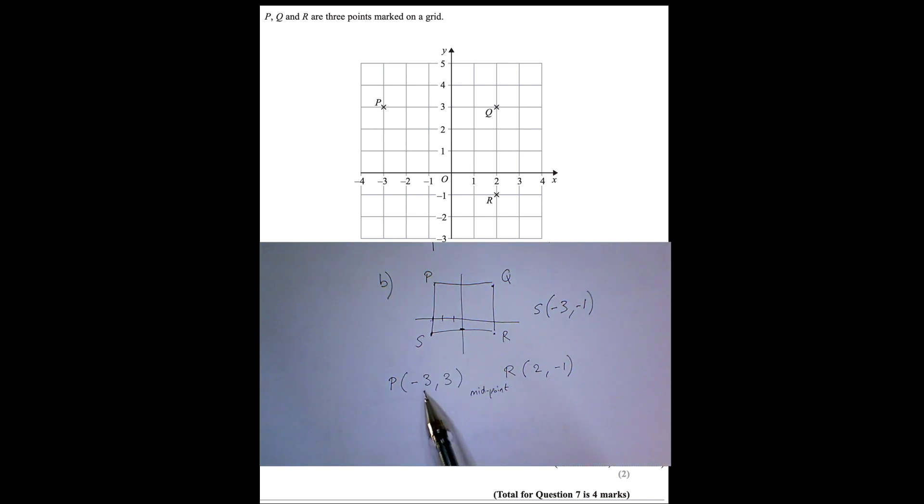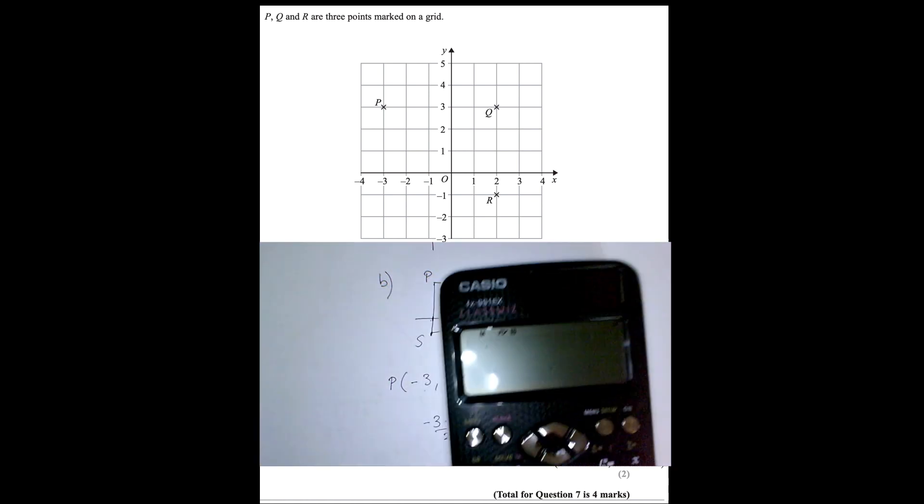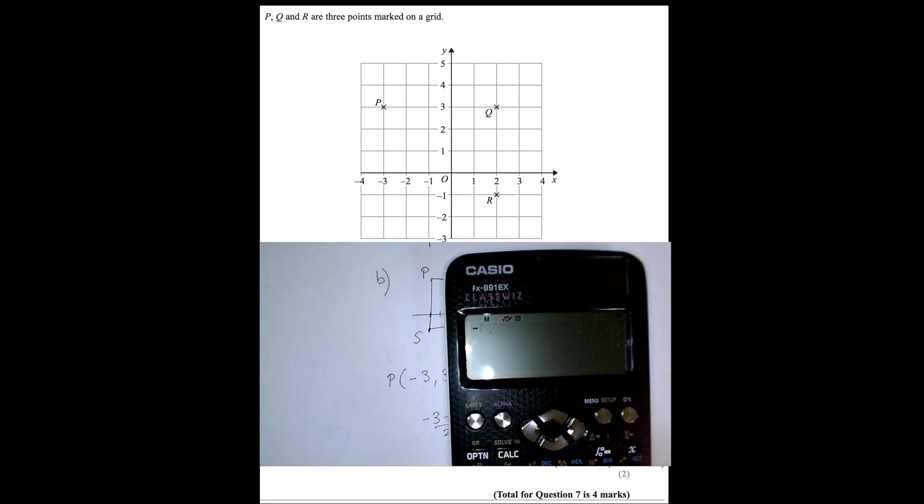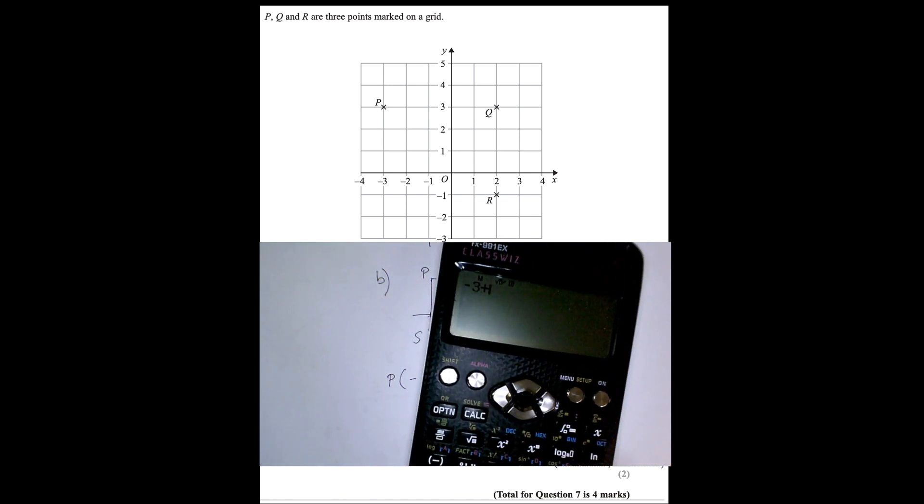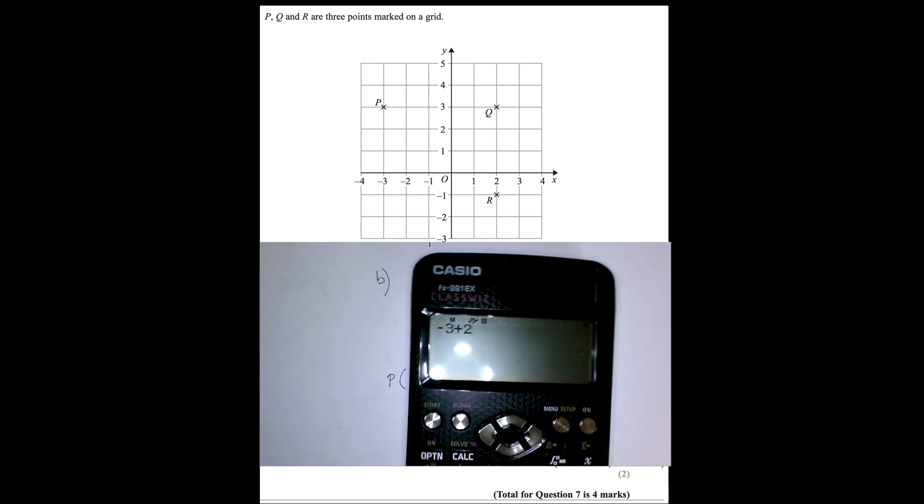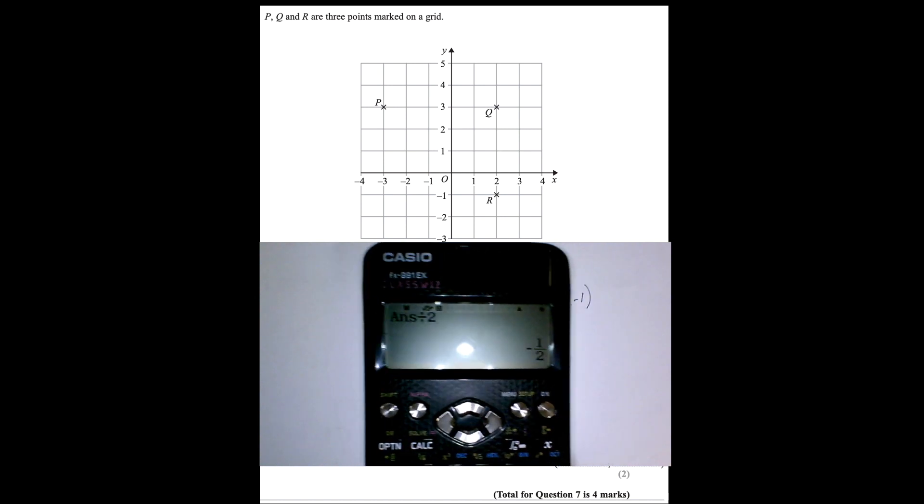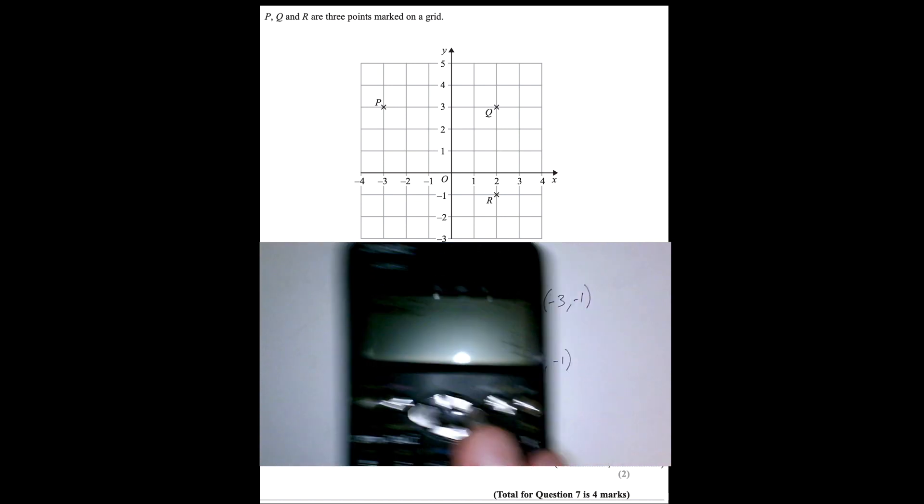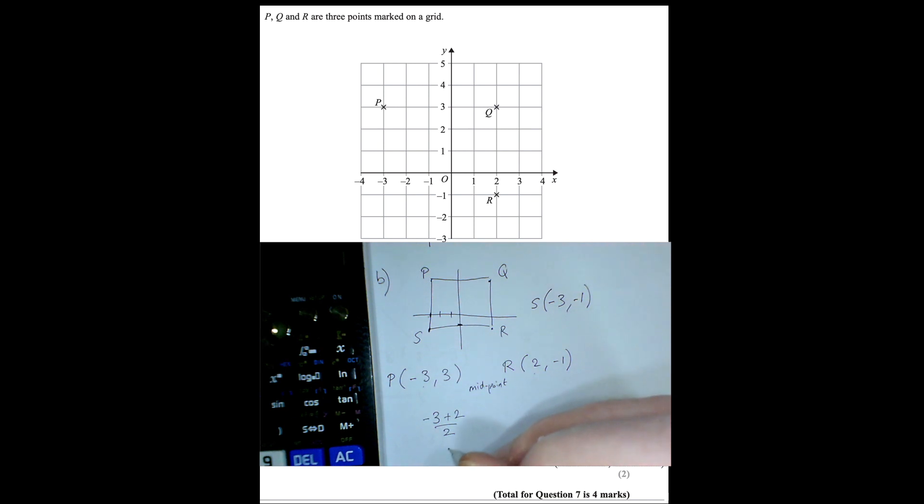So how do we take an average? Well we add the two numbers together, don't we, and then divide by 2. So we've got -3 plus 2, and then I'm going to divide it by 2 to find the average. And that's for the x coordinate for the midpoint. So I'm going to use my calculator. So -3 plus 2 equals, and then divide that by 2, and it tells me the x coordinate is minus a half. So I'm going to write minus a half. That's my x coordinate.